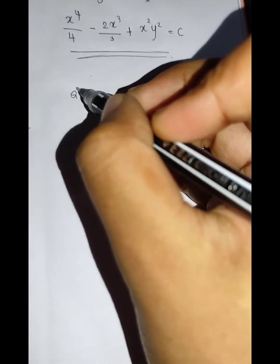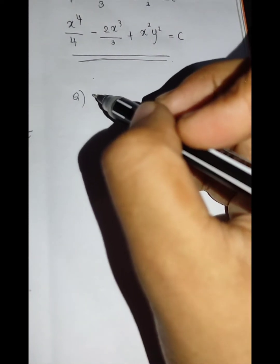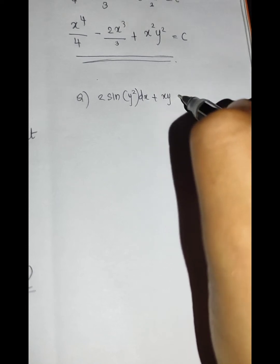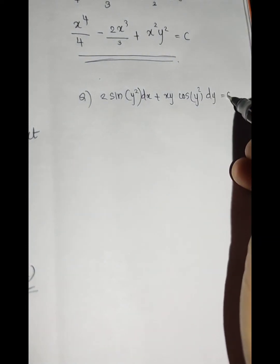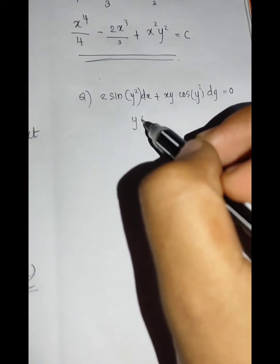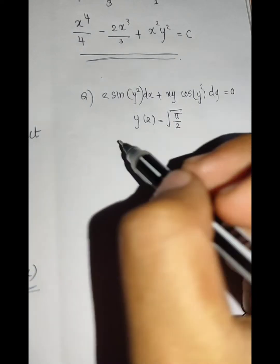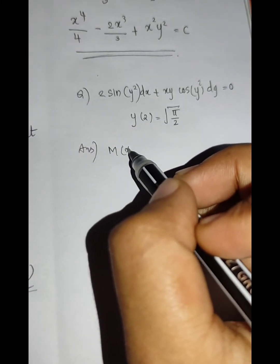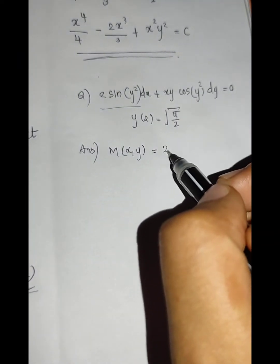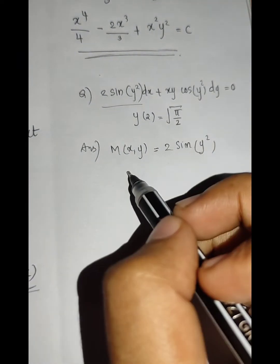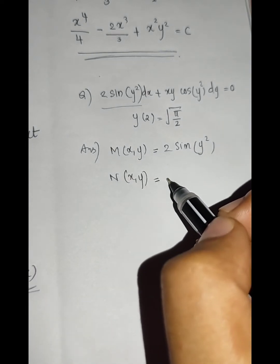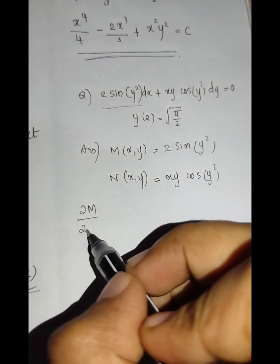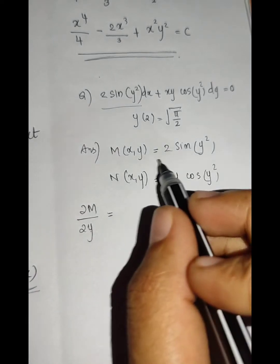Here is another problem. We need to solve the following IVP: 2 sin(y²) dx plus xy cos(y²) dy equals 0, with y(2) equal to the square root of 5π/2. If you have a condition in the IVP, you will apply it. M(x,y) is the first term: 2 sin(y²).